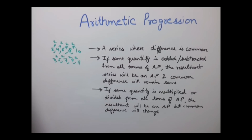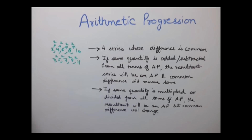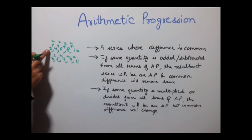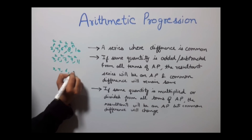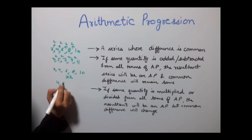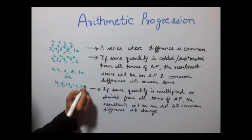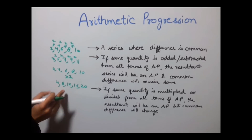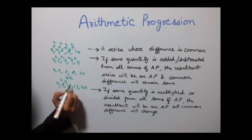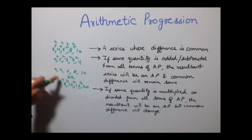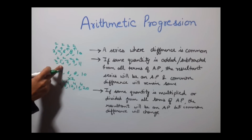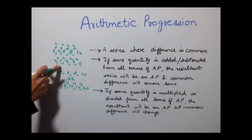If the same quantity is multiplied or divided from all terms of an AP, the resultant will still be an AP but the common difference will change. Taking the series 2, 4, 6, 8, 10 and multiplying by 2 gives us 4, 8, 12, 16, and 20. The new common difference is now 4 — whereas in the original series it was 2. Thus, common difference changes with multiplication or division, but remains the same with addition or subtraction.